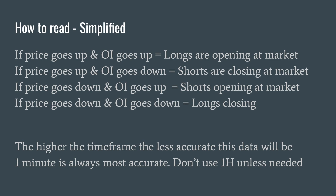Here's the simplified approach to reading open interest — a lot more nuance will be woven in later. The simple schematic to drill into your head: if price goes up and OI goes up, longs are opening. If price goes up and OI goes down, shorts are closing. If price goes down and OI goes up, shorts are opening. If price goes down and OI goes down, longs are closing out.